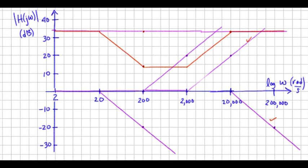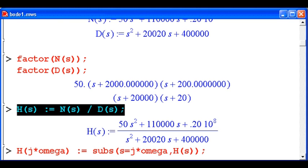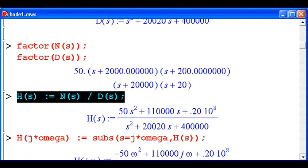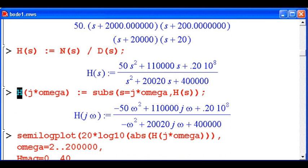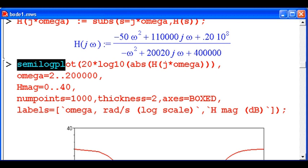Let's go ahead and compare that to the computer generated solution using Maple. So continuing in my worksheet, I take my numerator, divide it by the denominator to get my transfer function h of s. Here I'm saying let's let h of j omega be h of s evaluated at s equals j omega. So we use substitution command for that.